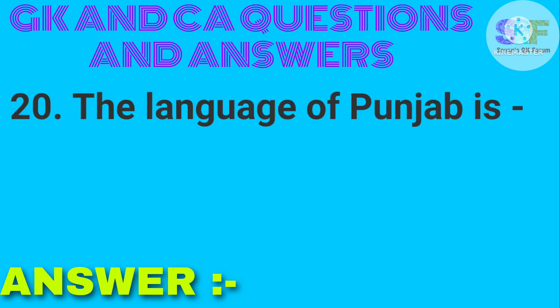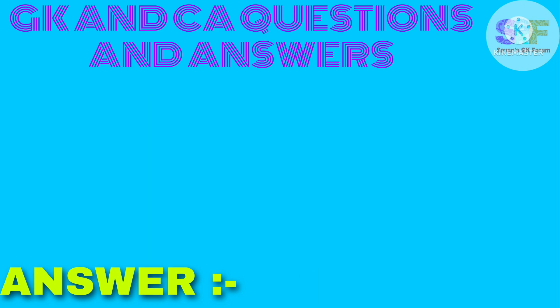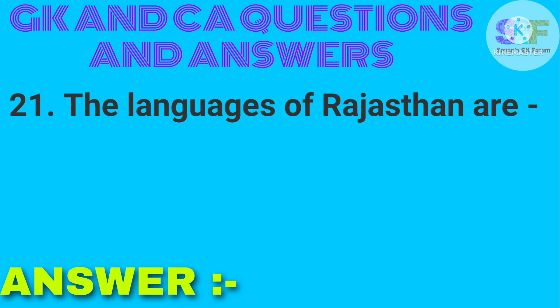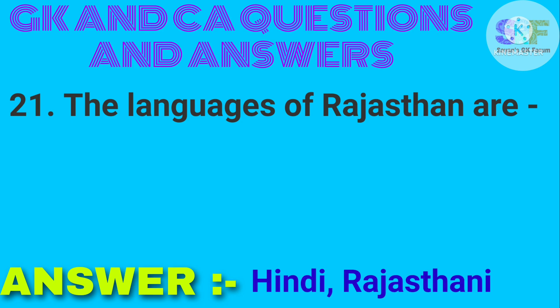The language of Punjab is Punjabi. The languages of Rajasthan are Hindi and Rajasthani.